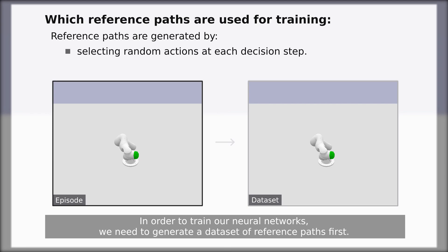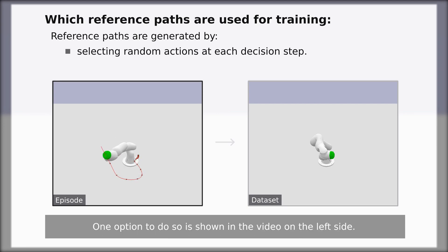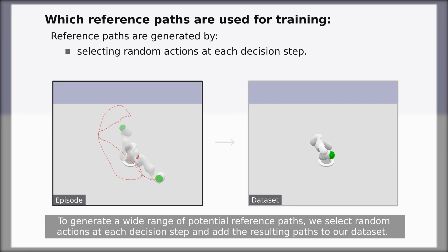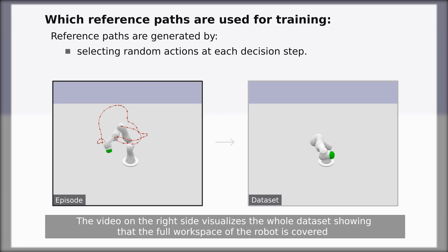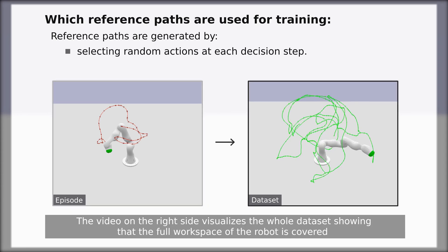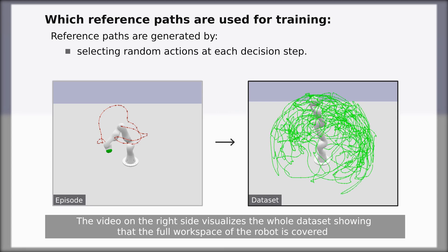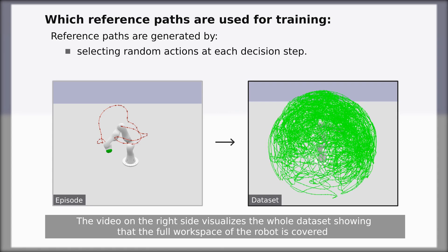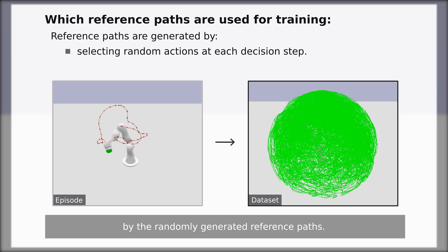In order to train our neural networks, we need to generate a dataset of reference paths first. One option to do so is shown in the video on the left side. To generate a wide range of potential reference paths, we select random actions at each decision step and add the resulting path to our dataset. The video on the right side visualizes the whole dataset, showing that the full workspace of the robot is covered by the randomly generated reference paths.